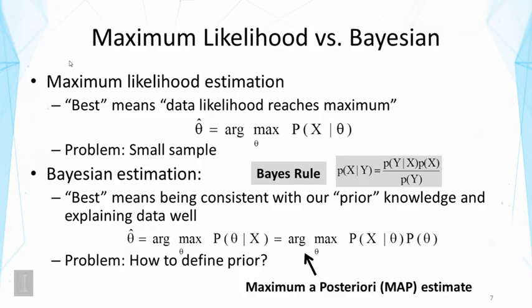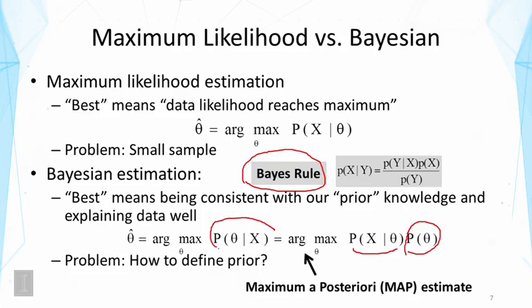One way to address this problem is Bayesian estimation, where we look at both the data and our prior knowledge about the parameters. We assume some prior belief about the parameters, defined by p of theta, which imposes preferences on certain theta values over others. Using Bayes rule, we can combine the likelihood function with the prior to give us the posterior probability of the parameter.